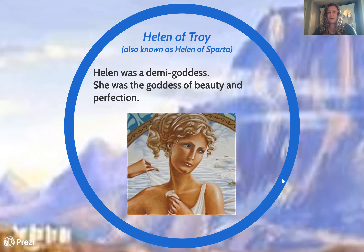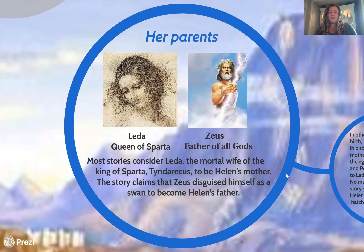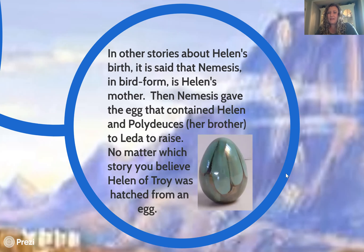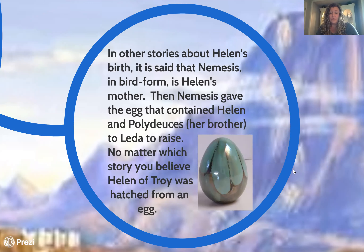Her parents were Zeus, the father of the gods, and Leda, the queen of Sparta. Most stories center around her being a demigod, meaning she had a god as a father and a mortal as a mother. One story claims that Zeus tricked her mother into sleeping with him. Another option is that Nemesis gave the egg containing Helen to Leda to raise, meaning she wasn't actually born by Leda. You just need to know that many people believe her to be a demigod; some even believe she was hatched from an egg.